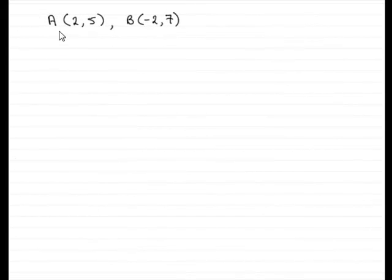Okay, so what we've got are the two points A and B at 2, 5 and minus 2, 7, and we've got to find the distance AB in the form K root 5.